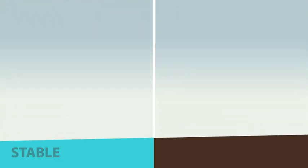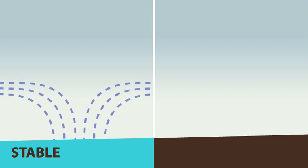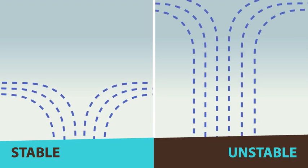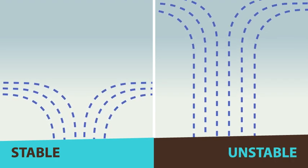If a layer of air is stable, it will suppress vertical motion. If the layer of air is unstable, it acts to enhance or accelerate vertical motion.